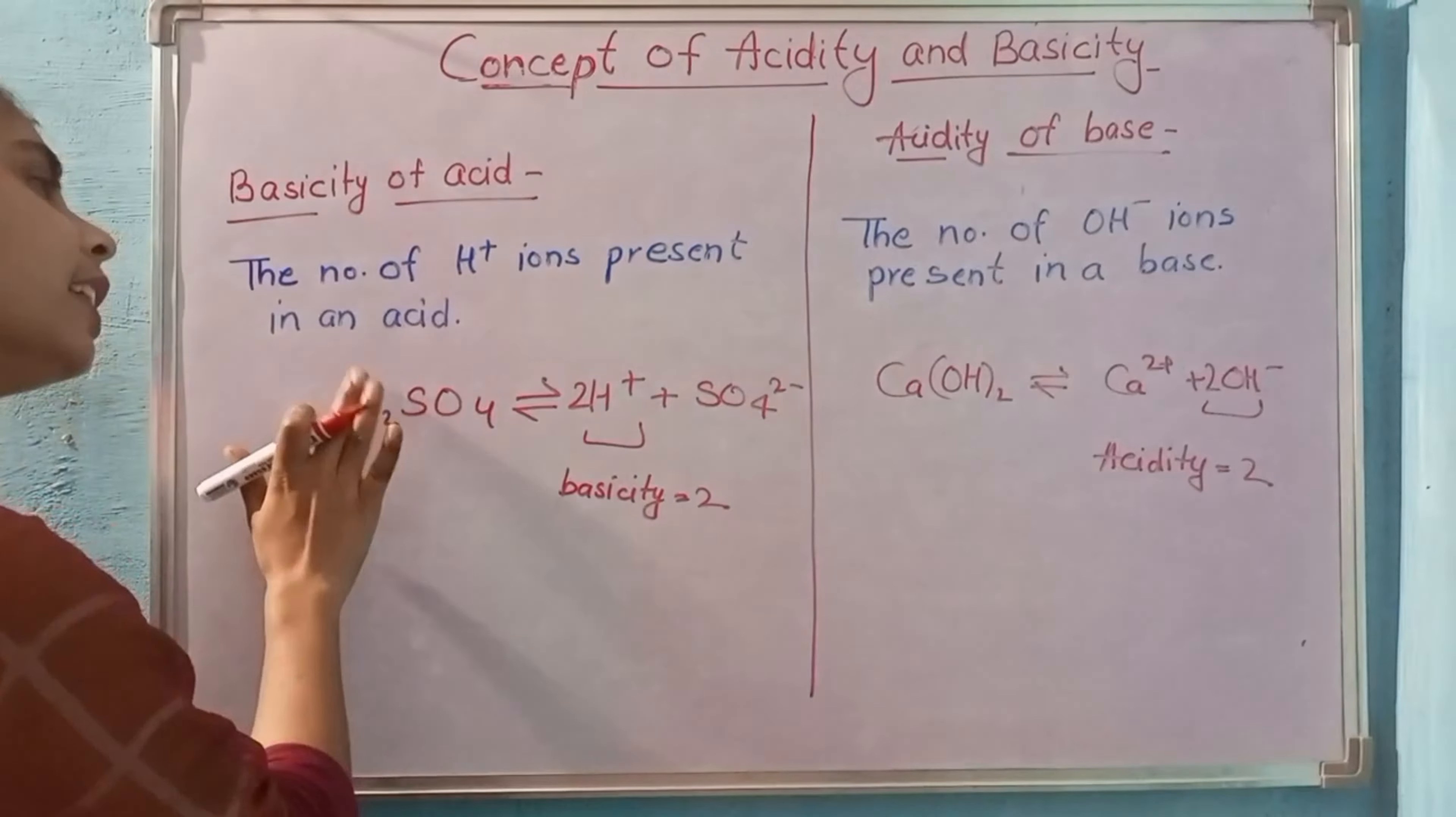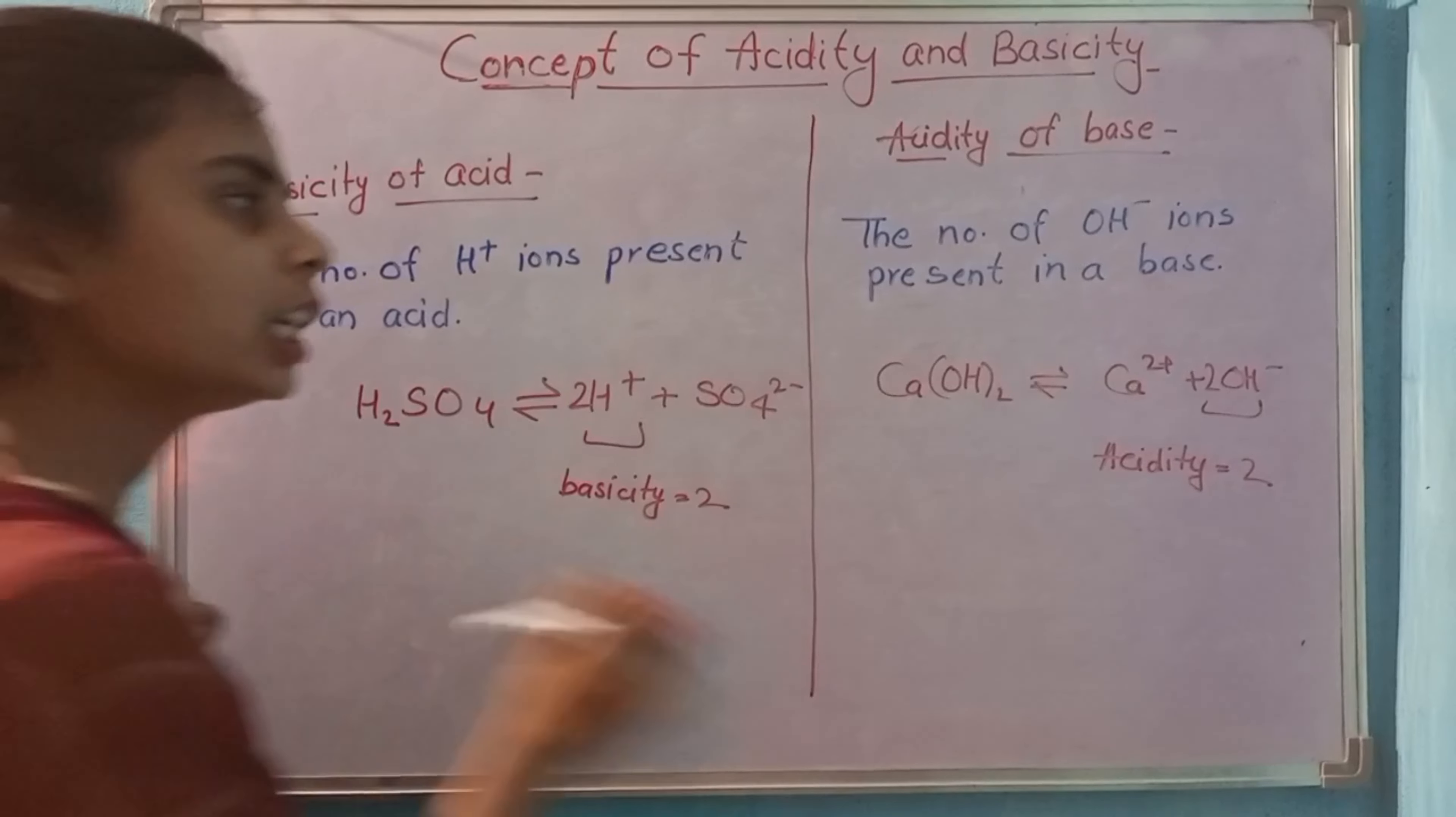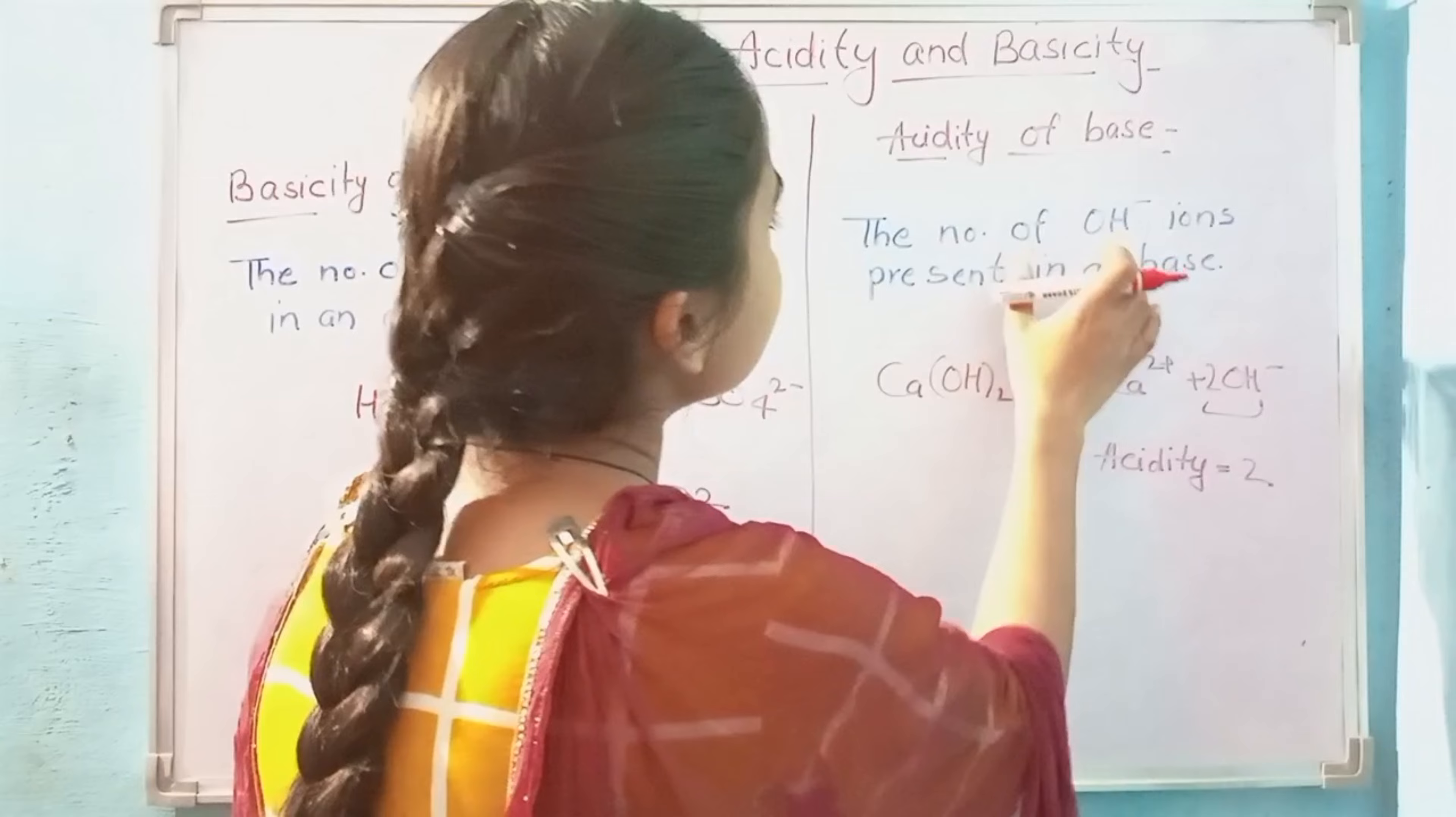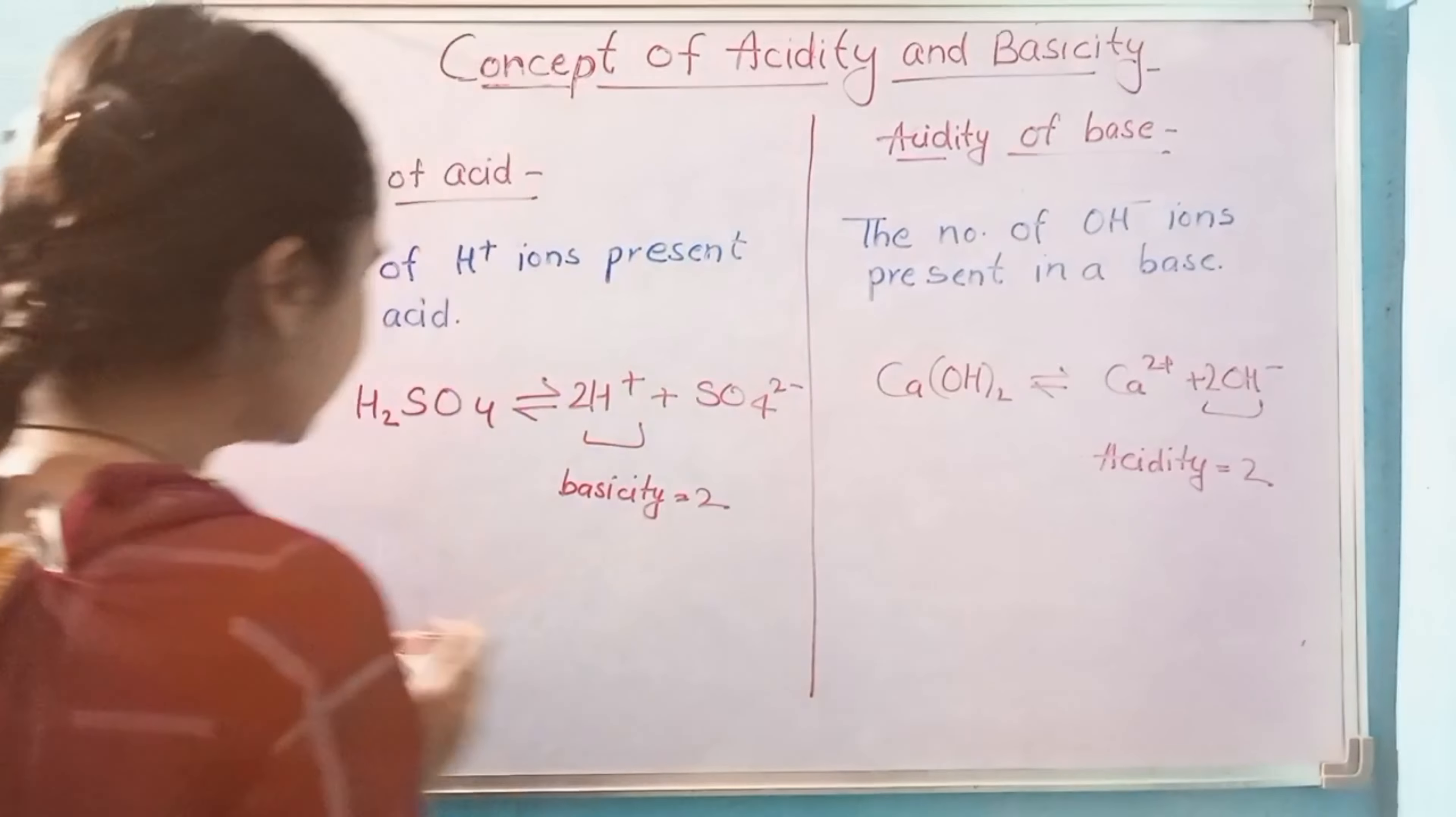Acids give H plus ion. When I count H plus ions, then it is basicity. And the basis is OH minus. When I count OH minus, then it is acidity.